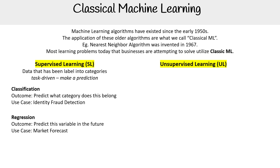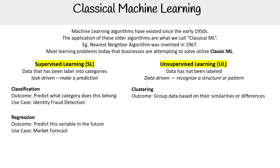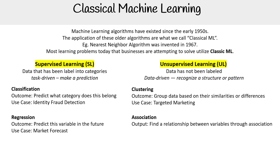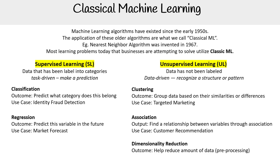For unsupervised learning, we have data that has not been labeled. This is where things are data-driven — we recognize a structure or pattern rather than making a specific prediction. Here we have clustering, where you group data based on similarities or differences; a use case would be targeted marketing. We also have association, which finds relationships between variables; a use case here would be customer recommendations. Finally, we have dimensionality reduction, which helps reduce the amount of data in pre-processing when you have a lot of data — a use case here would be big data visualization.